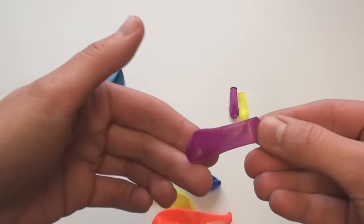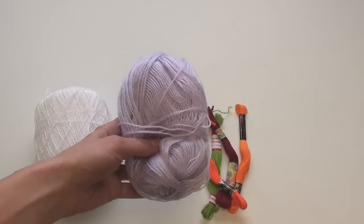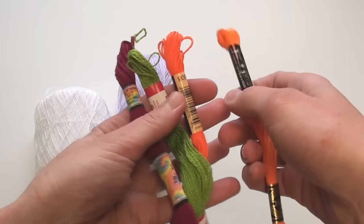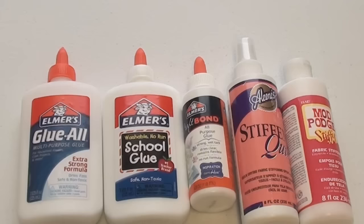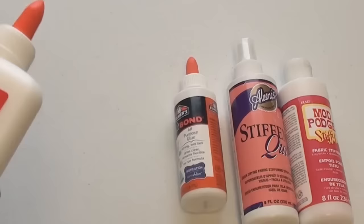To begin you will need some balloons. Any size will work, but for the sample you just saw we used the smaller water balloons. Next you'll need string. For this sample I'll be using embroidery floss.